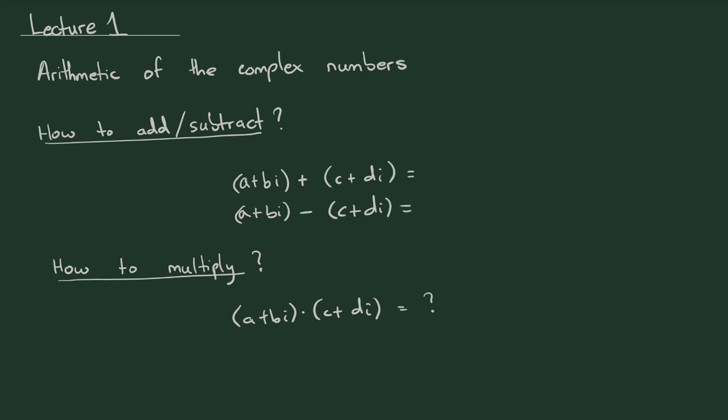Since we have complex numbers, it makes sense to think about the arithmetic that can be used with them. Addition and subtraction are very straightforward — done component-wise. To add (a + bi) and (c + di), you get (a + c) + (b + d)i. Similarly for subtraction: (a − c) + (b − d)i.